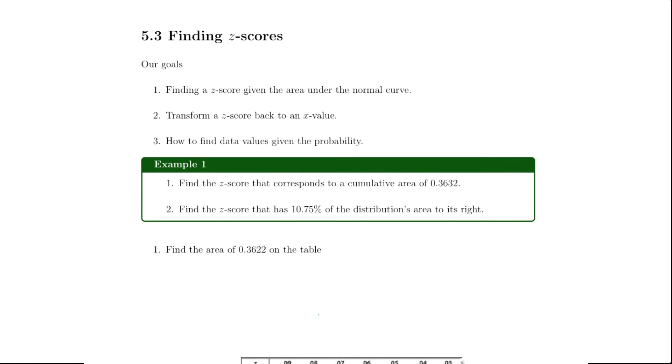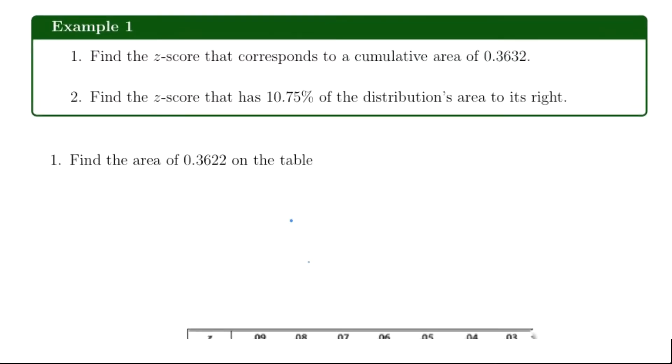Let's start with Example 1: Find the z-score that corresponds to a cumulative area of 0.3632. First, we'll draw the normal curve. In the center, we'll put the z-value of 0, and we know that a z-value of 0 gives us 50 percent. The area we're looking at, 0.3632, will put us somewhere over here.